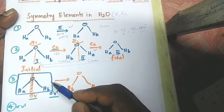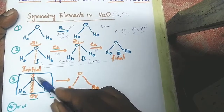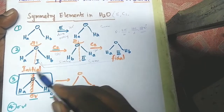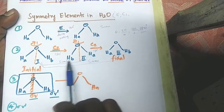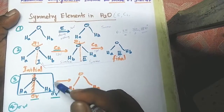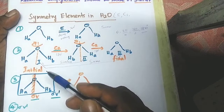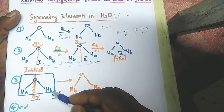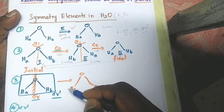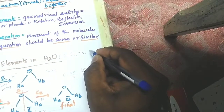Another vertical plane is also present. If we consider H2O as lying in the plane of the paper and divide the entire molecule — both hydrogens and oxygen — into two halves, one half is the exact mirror image of the other. This is also a vertical plane, and it is perpendicular to the first sigma V. This second vertical plane is named sigma V prime. So water possesses both sigma V and sigma V prime.